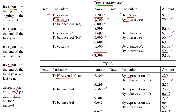From the second year onwards in the TV account, only one entry is needed each year — the depreciation charge. Since it is the diminishing balance method, depreciation for year 2 is calculated on the brought-down balance: ₹7,380 × 10% = ₹738. Bring down the balance to year 3. For year 3: ₹6,642 × 10% = ₹664 depreciation. Tally and bring down the balance. We work out the TV account for all three years.